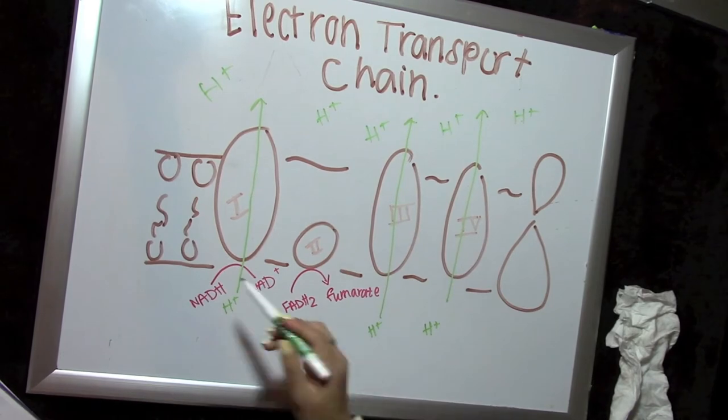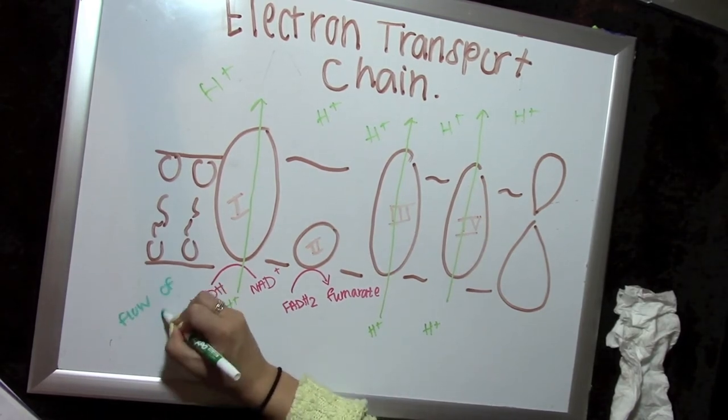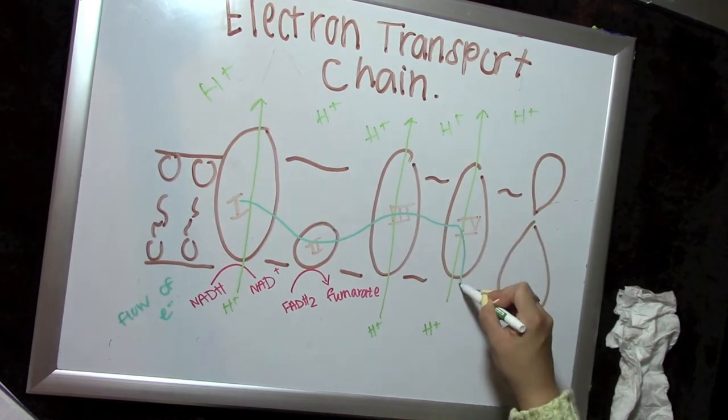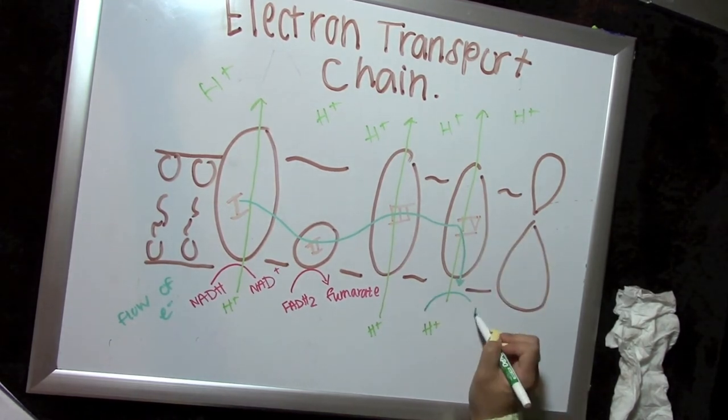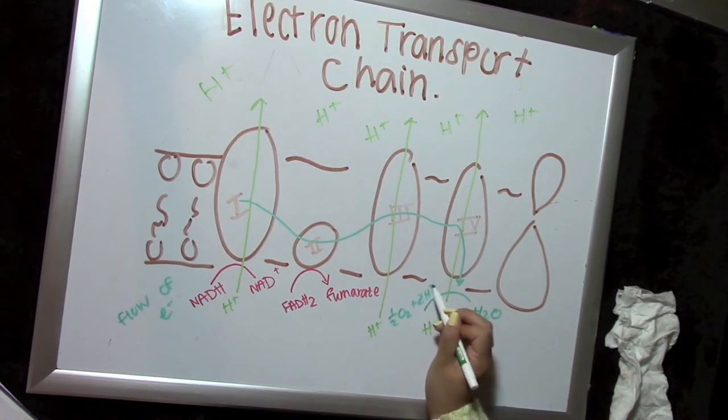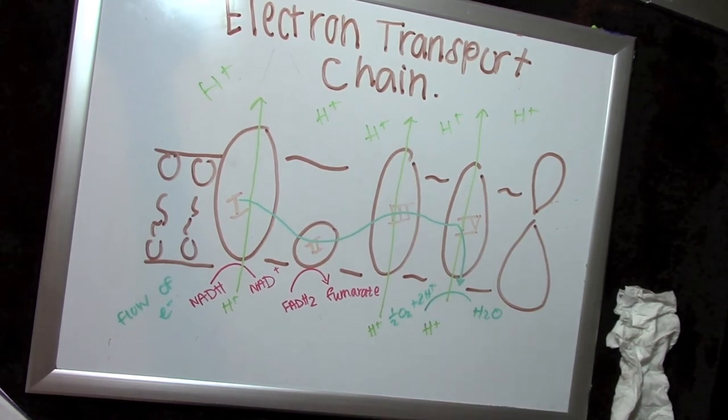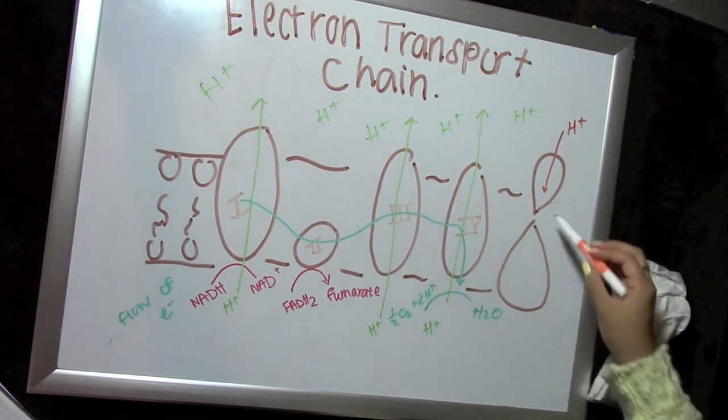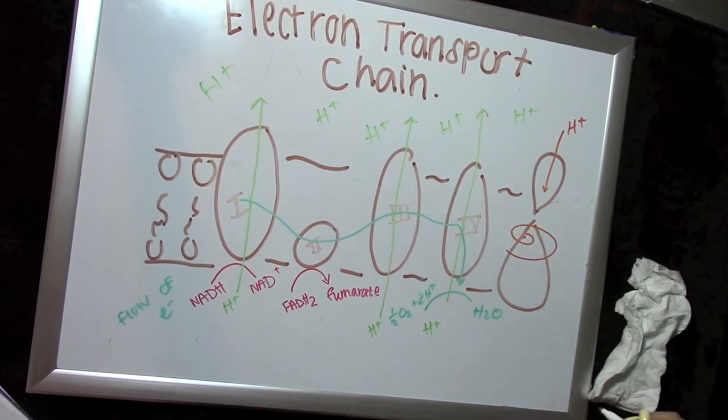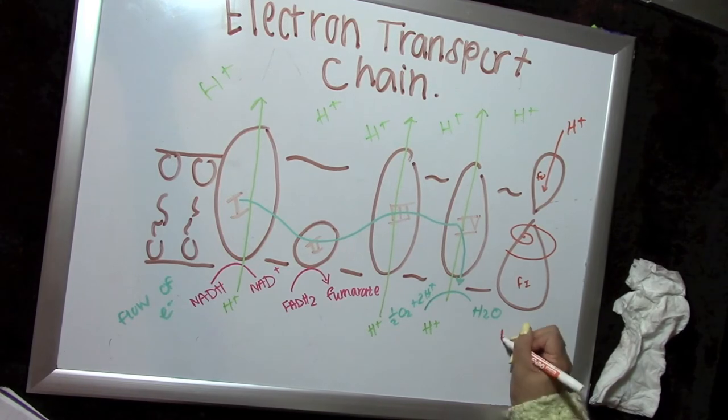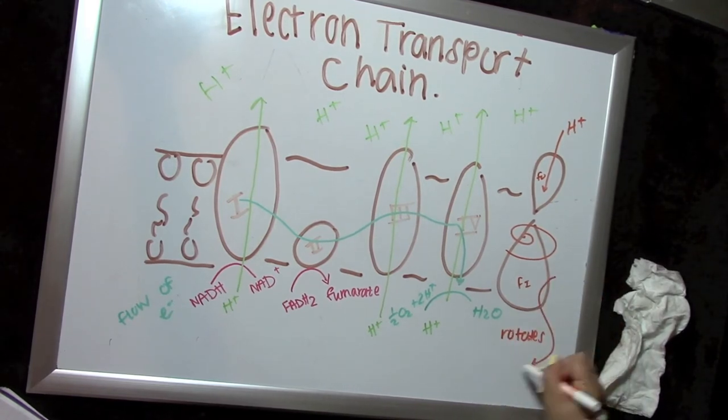The flow of electrons go through these complexes, which end up at the last complex 4. These electrons are then added to oxygen in order to make water. With all the H pluses going on the outside of the plasma membrane, it causes a high concentration of protons, and it wants to go back inside to the plasma membrane, which it goes through this ATP synthase, which has an F0 and F1 subunit. The H pluses go through the F0, and this causes the F1 subunit to start rotating.